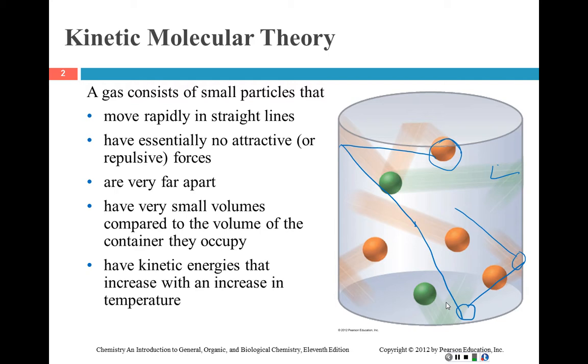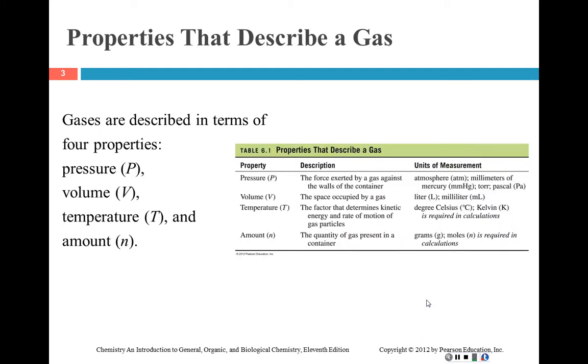They have essentially no attractive or repulsive forces, so you assume that they really don't have any type of interaction with each other. They're very far apart because they're gases. They have very small volumes compared to the volume that they're in, and their kinetic energies will increase if you increase temperature. So if I light a fire under this, then it's going to make these guys move faster. So those are some basic components of molecular kinetic theory. Remember kinetic is energy in motion.